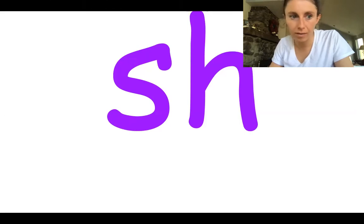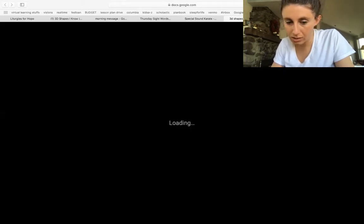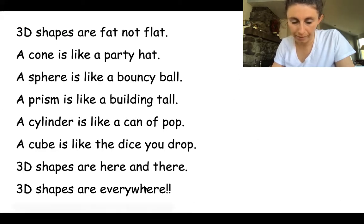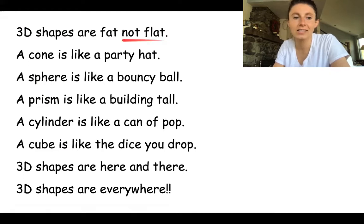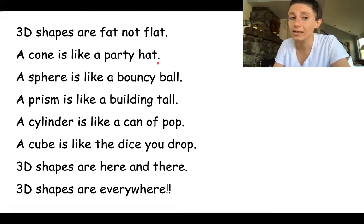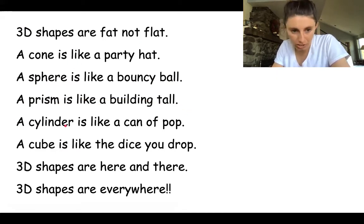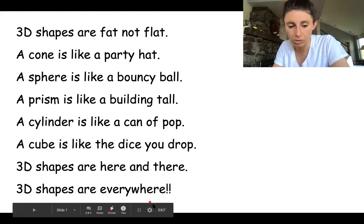3D shapes poem — are you ready? Today we're going to be writing our 3D shapes. Let's read it together: '3D shapes are fat, not flat. A cone is like a potty hat. A sphere is like a bouncy ball. A prism is like a building tall. A cylinder is like a can of pop. A cube is like the dice you drop. 3D shapes are here and there, 3D shapes are everywhere.' Good reading, you guys!